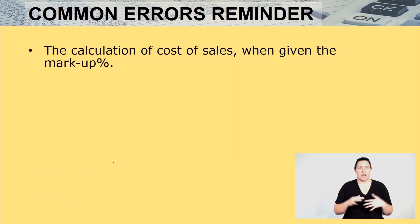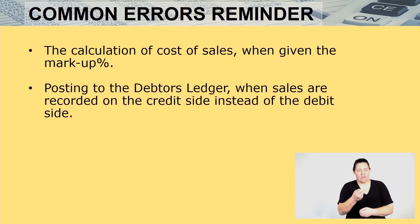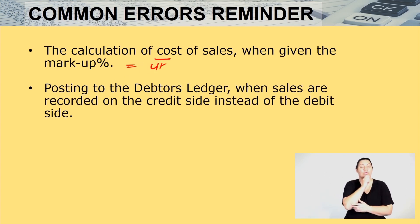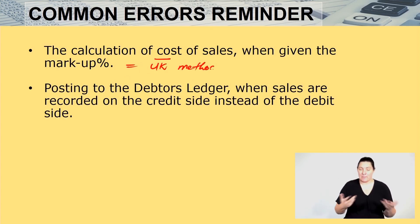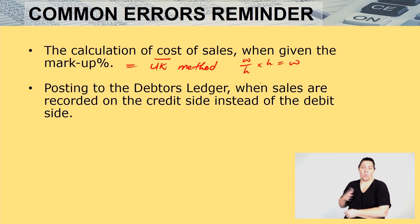Now, the common errors and reminders I want to give you is the calculation of cost of sales when given the markup. Remember, always use the UK method — what you want over what you have, multiplied by what you have, to give you what you want.